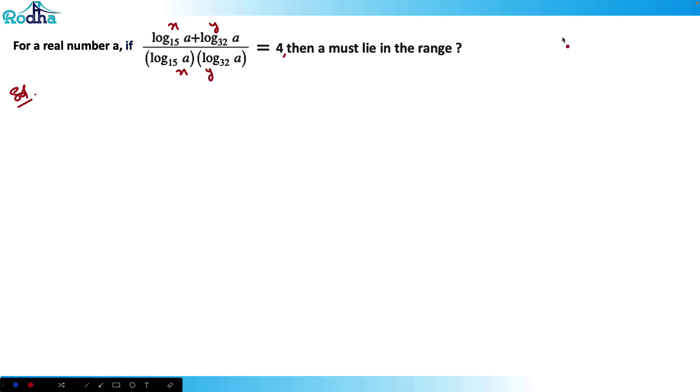If you observe this, this is actually (x + y)/(xy) form. So what you can do is you can just separate it like this: x/(xy) + y/(xy). And this will get cancelled, and this becomes 1/y + 1/x.